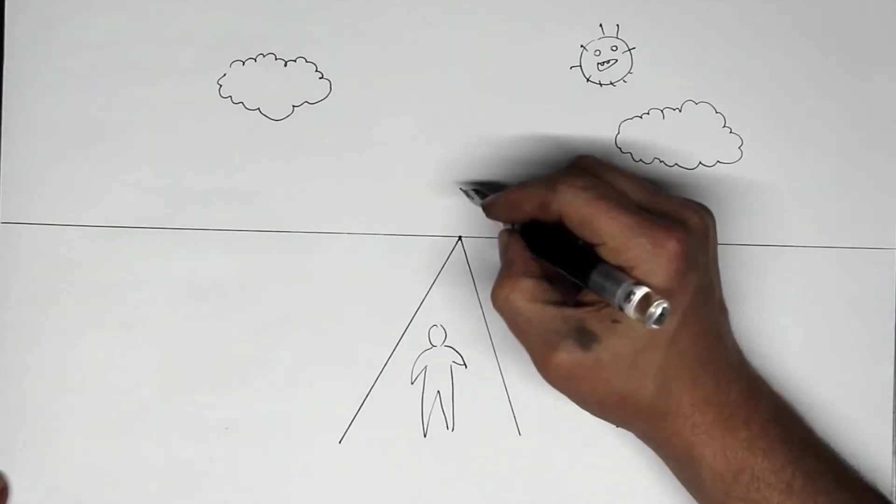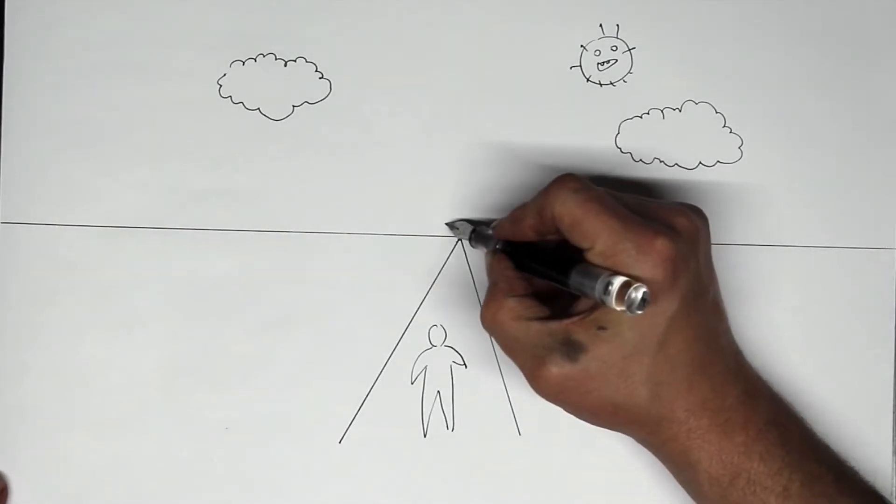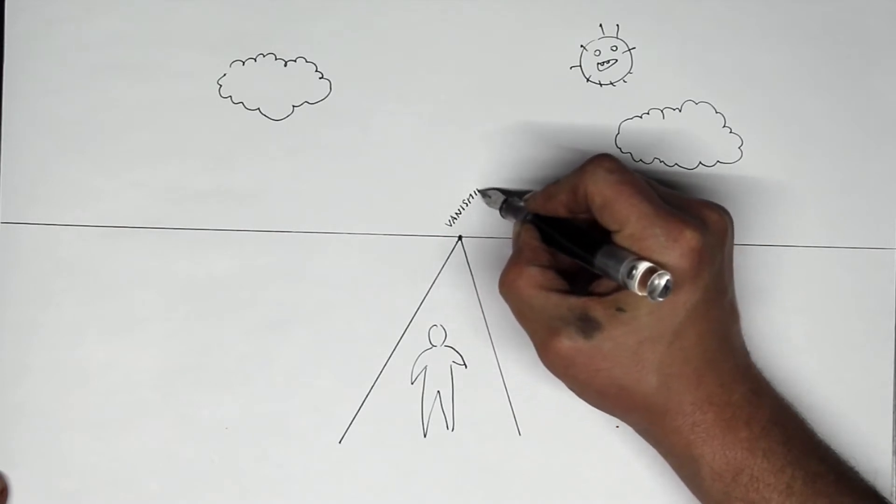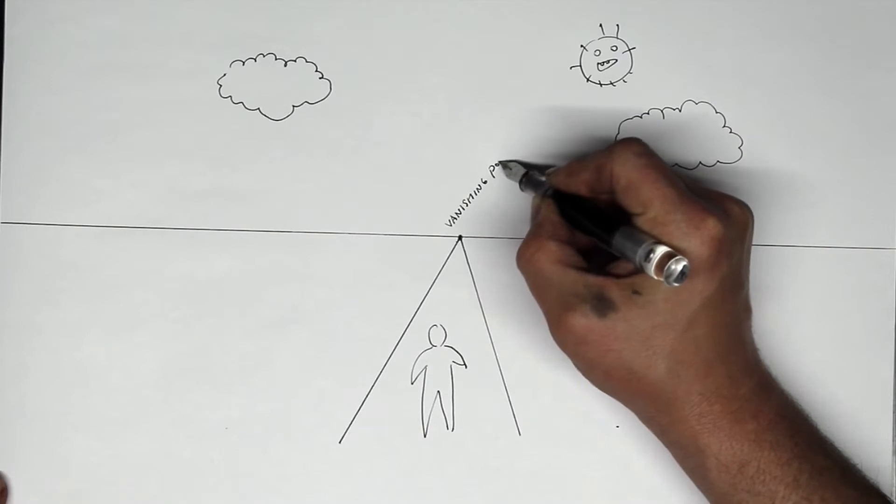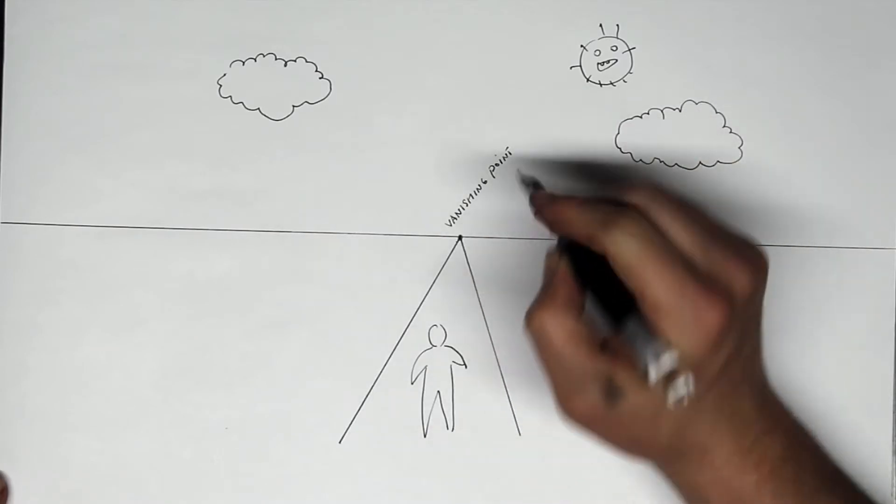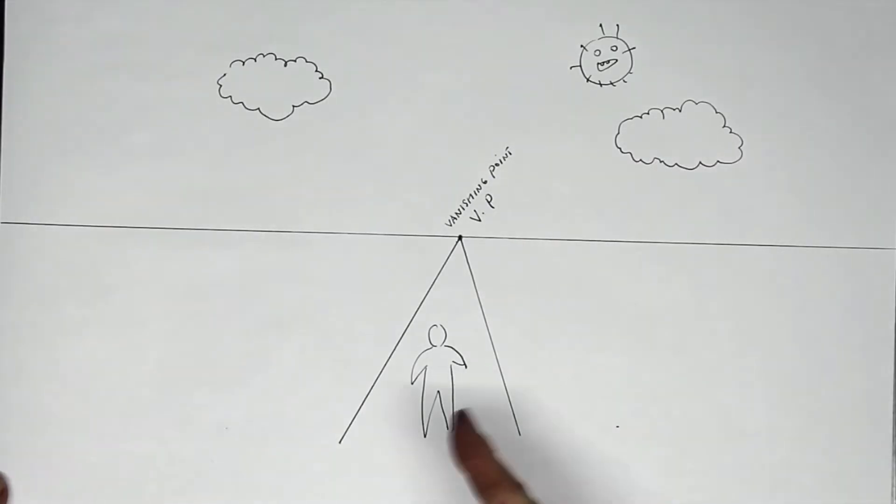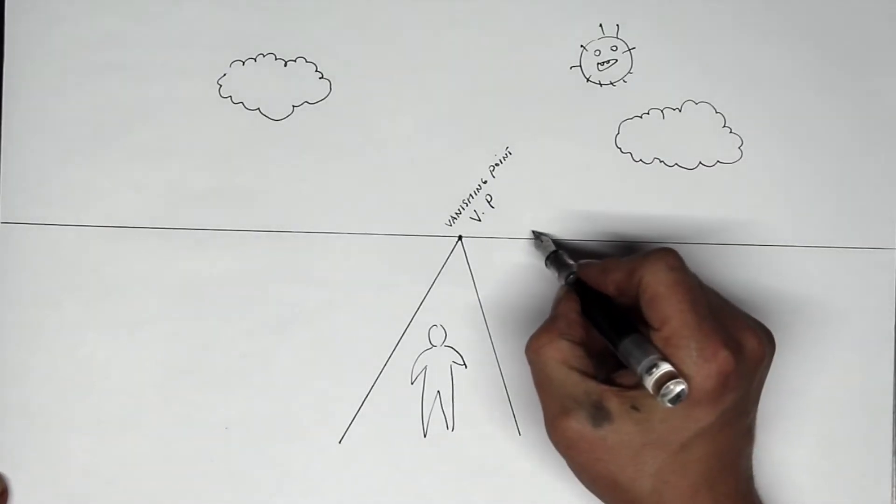This spot where the sides of the road touch is called a vanishing point, usually abbreviated as VP. The horizon is called a horizon line, often abbreviated as HL.